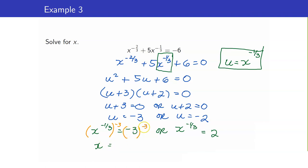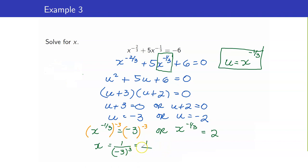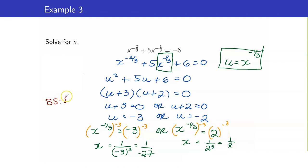So for x^(-1/3) = -3, raising to -3: x = (-3)^(-3) = 1/(-3)³ = 1/(-27) = -1/27. Similarly, for x^(-1/3) = -2, raising to -3: x = (-2)^(-3) = 1/(-2)³ = 1/(-8) = -1/8. So the solution set is {-1/27, -1/8}.